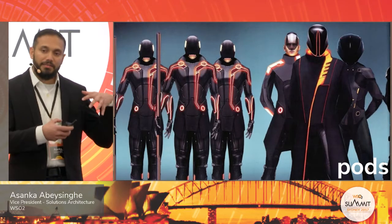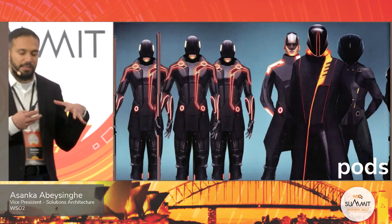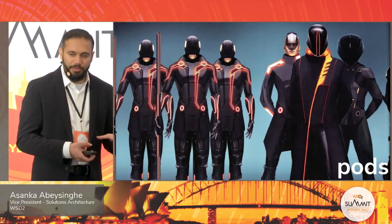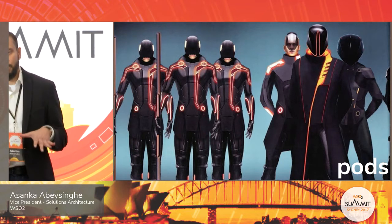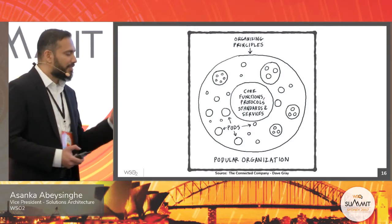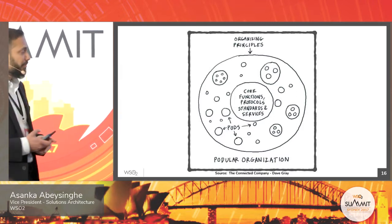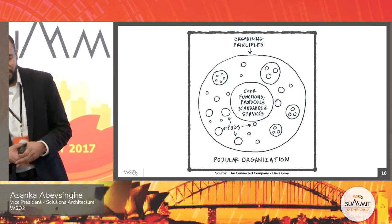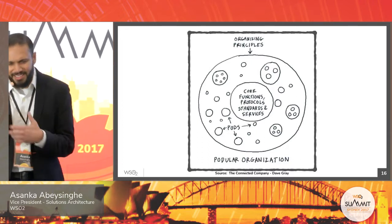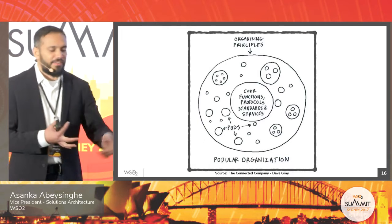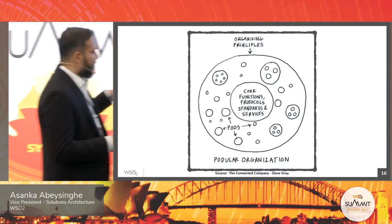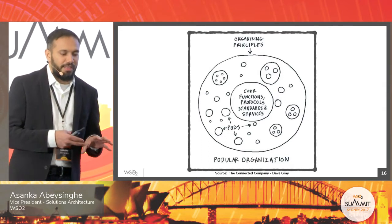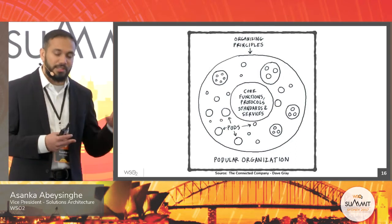We operate in these projects in pods — a small team, maximum 10 people. Amazon calls it a pod that should be able to share a pizza. But to operate a pod, the organization should have a proper pod structure. I took this example from a book by Dave Gray called The Connected Company. In that book, Dave explains that to operate an organization as a pod, you need a podal organization structure and organization policies that support being podal.